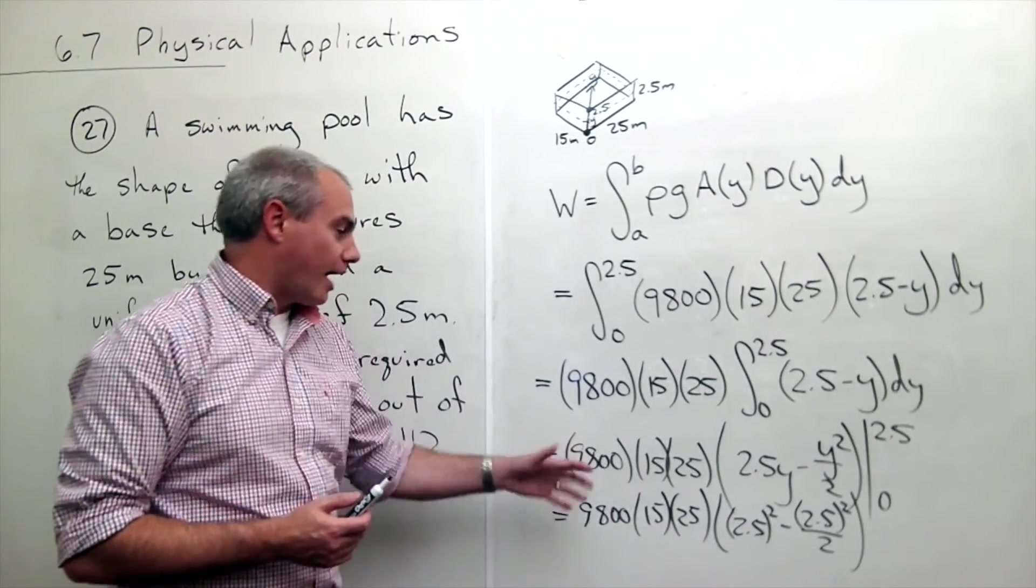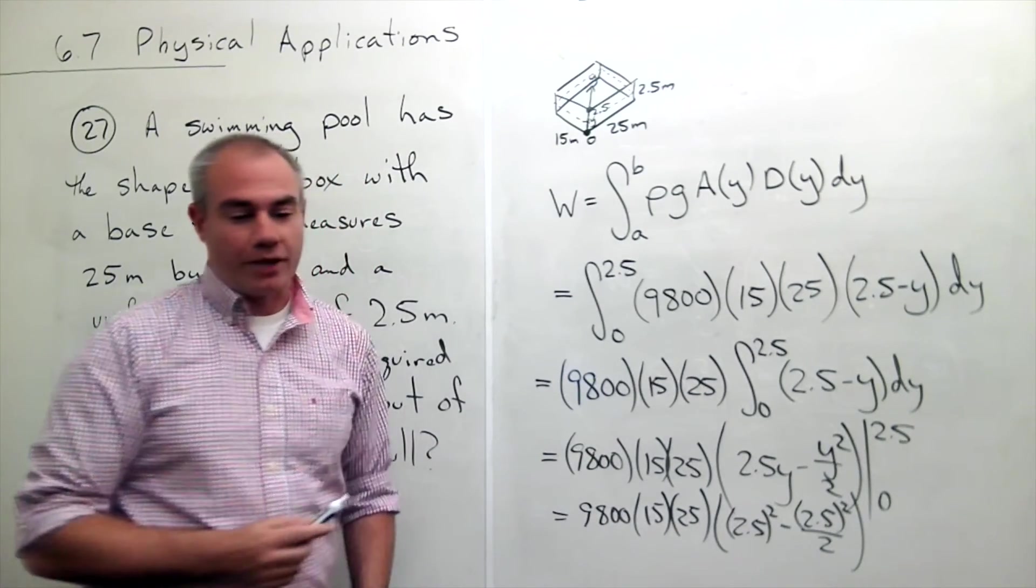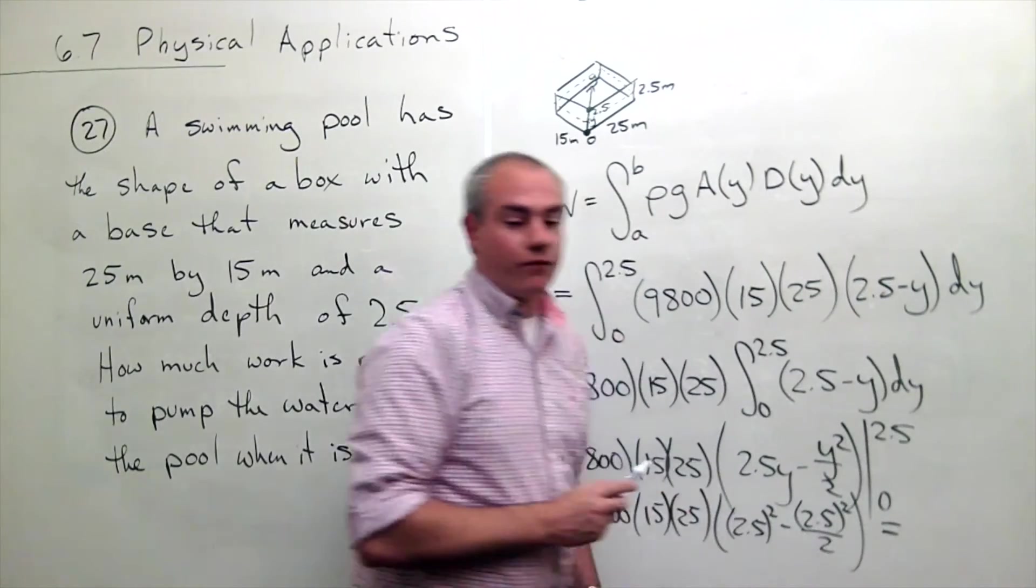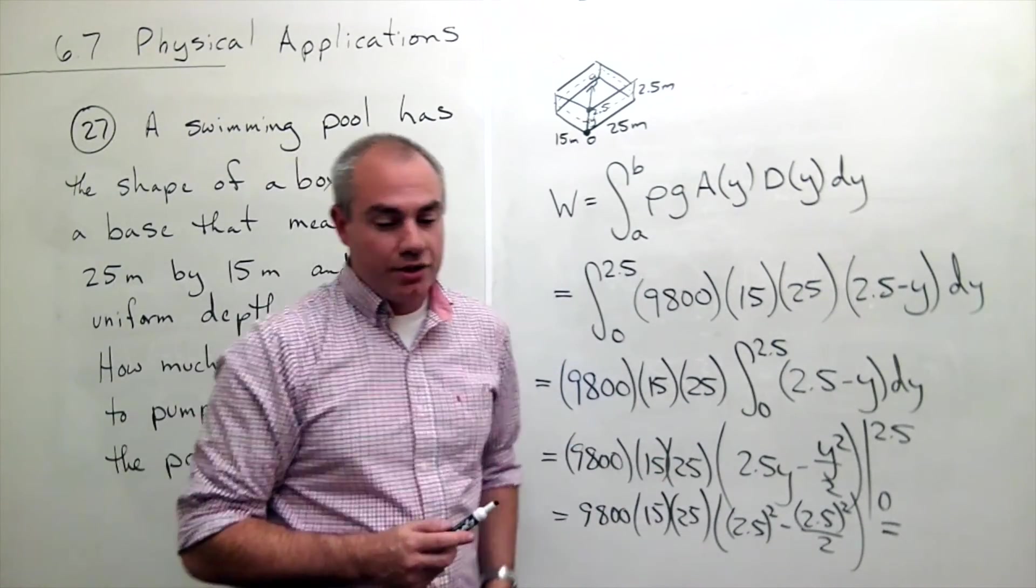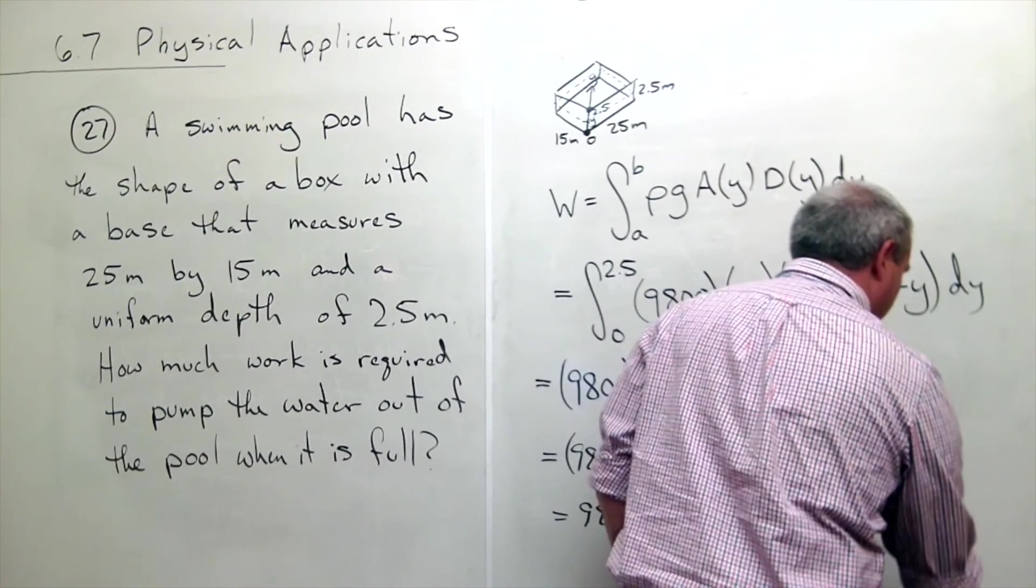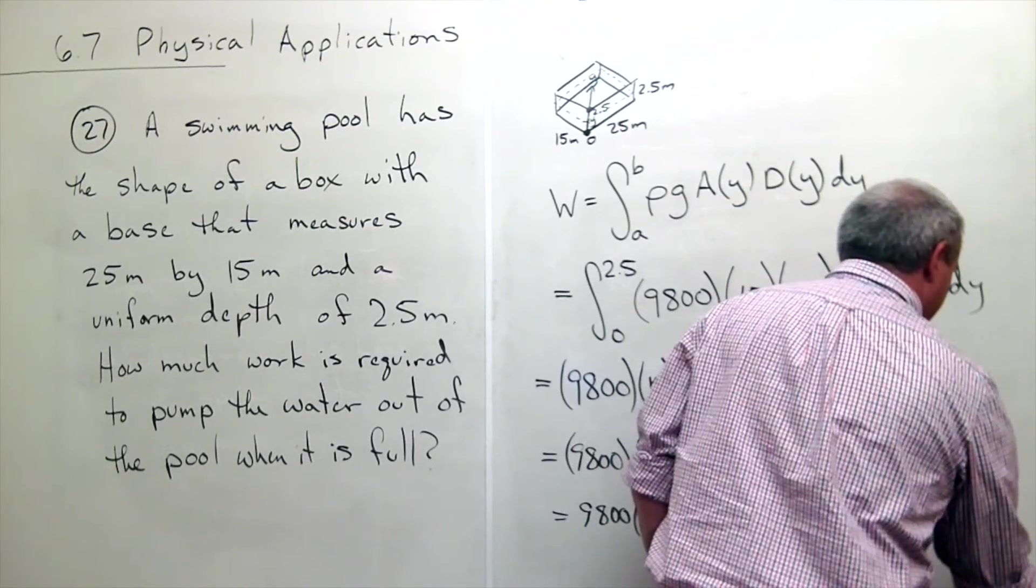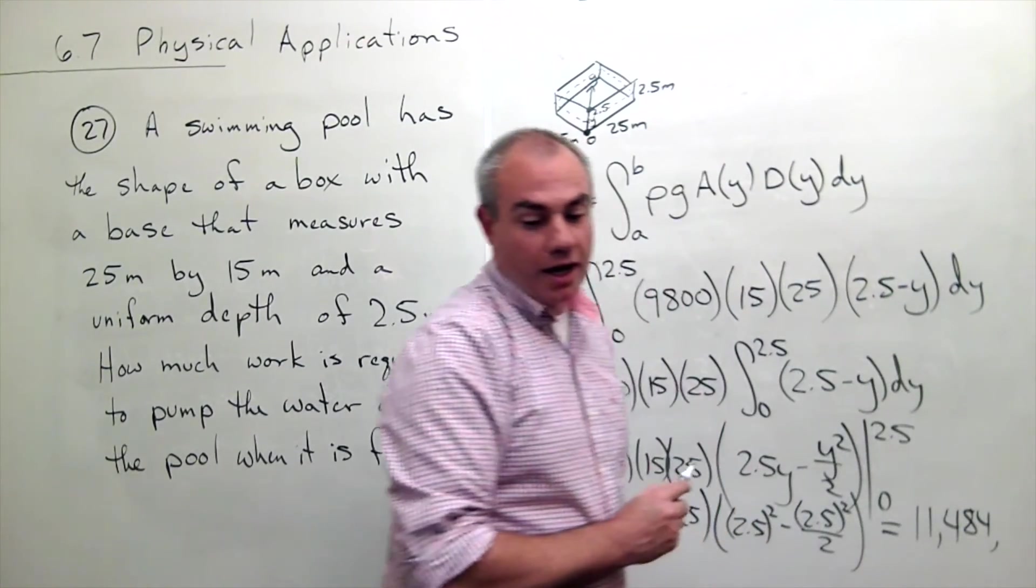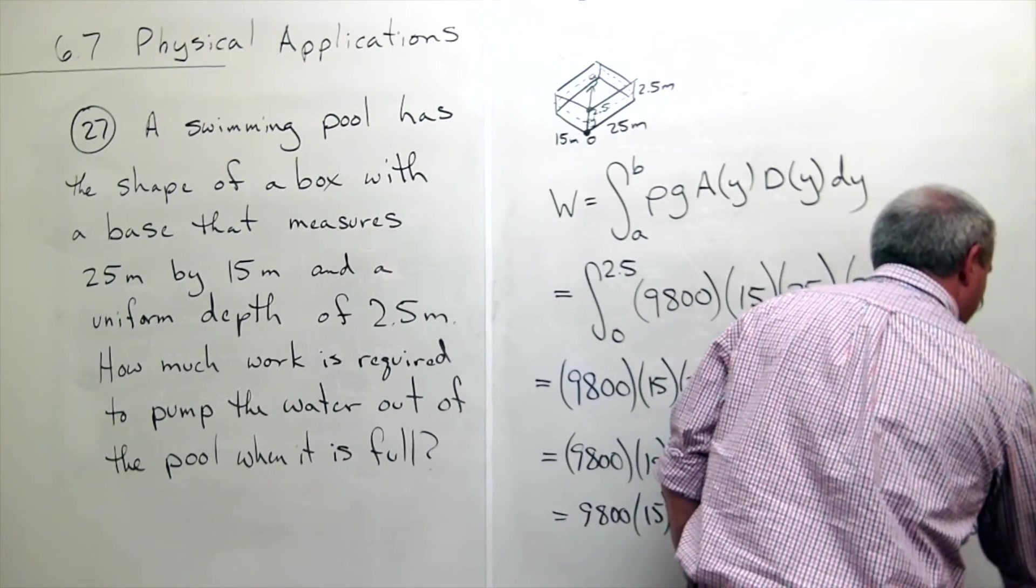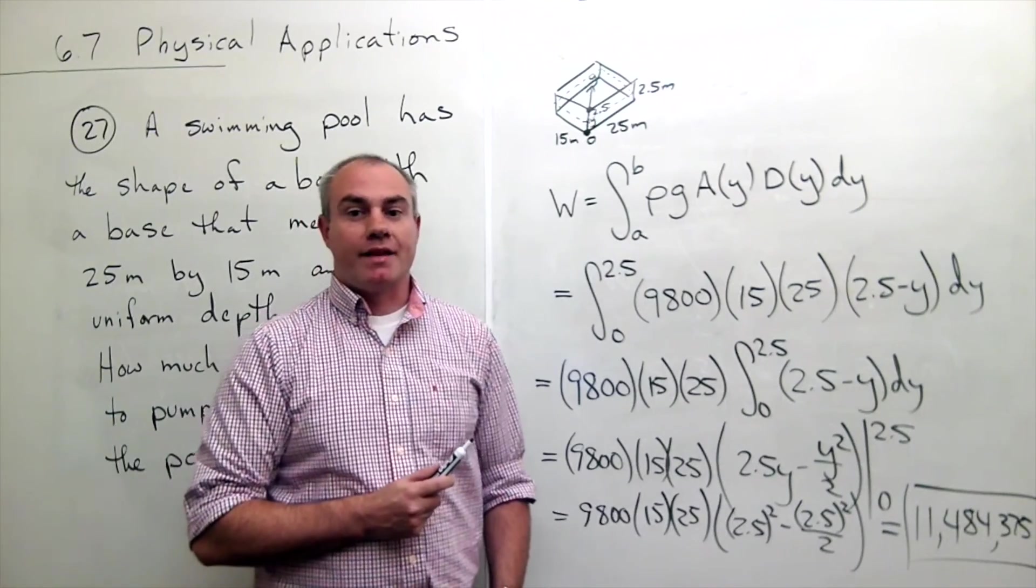So this is the answer I would need to actually plug this into a calculator, see what we get. Instead, I have it here. Let me write it down for you. If you plug this all in, you'd get something like 11,484,375 joules. And that is my answer.